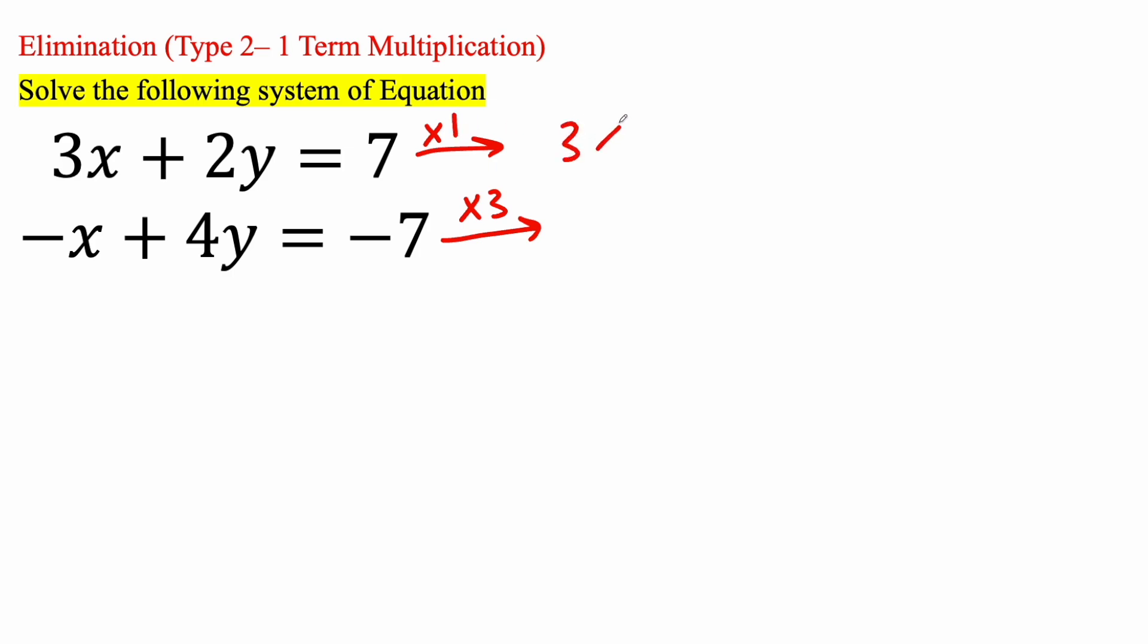So we're going to get 3x plus 2y is equal to 7. Now this piece, negative x times 3 is going to give us negative 3x. 4y times 3 is going to give us positive 12y is equal to negative 7 times 3 is going to give us negative 21.